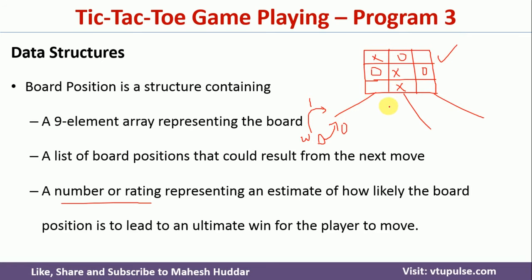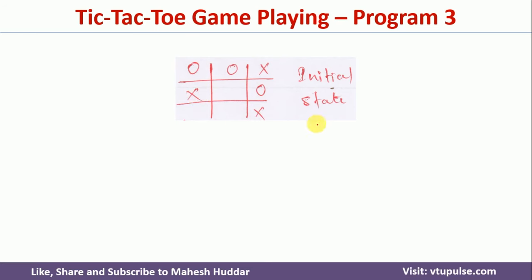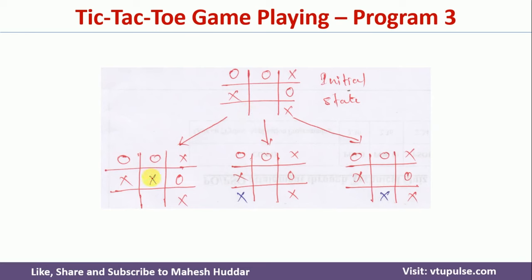We will try to understand this with a very simple example. Let us assume this is the initial state — O has played at three places and X has played at three places. Assume that X has played first, so the next move should be made by X. X can play over here, or over here, or over here — so there are three possible cases. If X plays here, this is the possible board state; if X plays here, this is the possible state; and if X plays here, this is the possible state. From this current state, we are trying to find out which of these three moves is best.